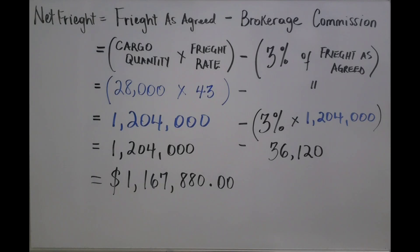Now let's move on to net freight. The formula for net freight is freight as agreed minus brokerage commission. The freight as agreed equals cargo quantity multiplied by the freight rate, and the brokerage commission is 3% of that freight as agreed.